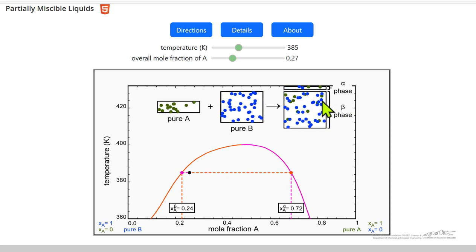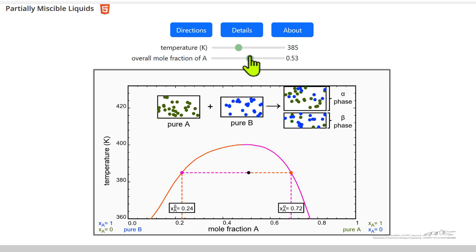And then the two phases: the amount of alpha phase is very small, that's proportional to this length here; amount of beta phase, much larger. The relative colors are proportional to the mole fractions in those phases.